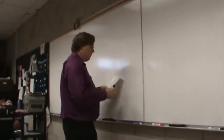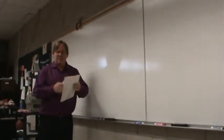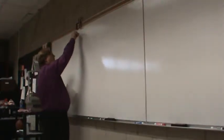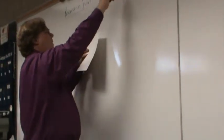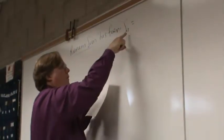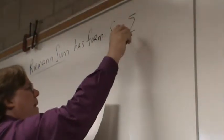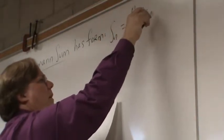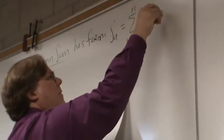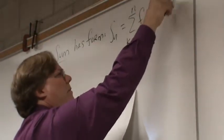Let's go ahead and define what a Riemann sum is. A Riemann sum has the following form: the sum of n rectangles is equal to the sum, as k goes from 1 to n, of f of c sub k times delta x sub k.